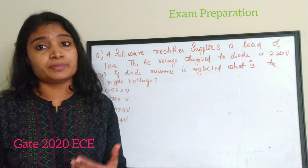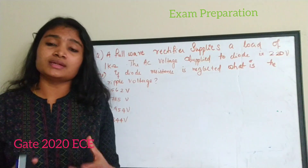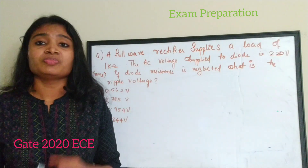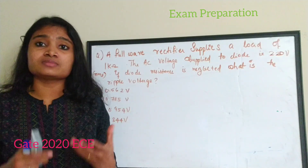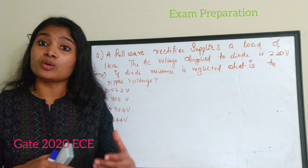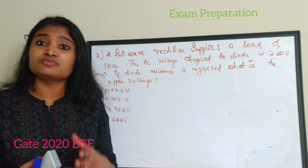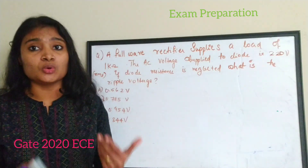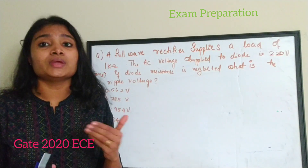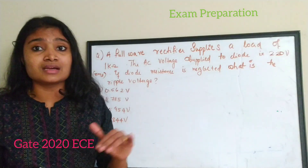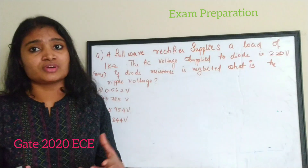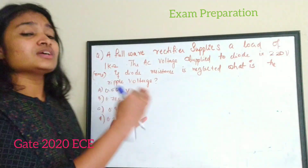What is actually ripple? We know that a rectifier is converting AC, that is alternating current, to DC, that is direct current. When this conversion is being done, some portion of the AC will get incorporated into the output, or there will be some fluctuations in the DC output due to the presence of some AC component. These fluctuations or variations present in your steady current or the DC current are called ripple.